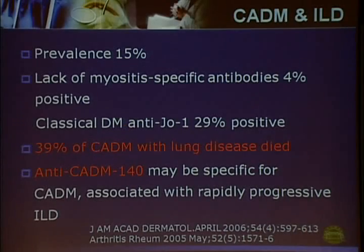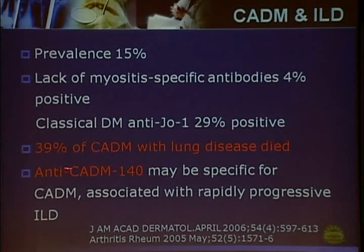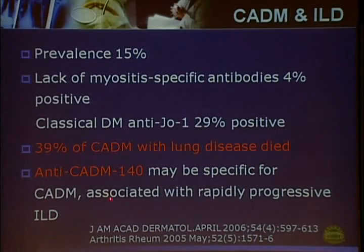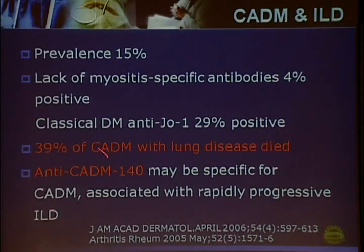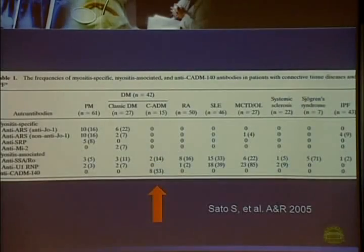CADM patients, unlike classical dermatomyositis patients, are usually anti-Jo-1 negative but have non-classical antibodies such as anti-CADM-140, which may be specific for CADM patients. These antibodies usually suggest rapidly progressive interstitial lung disease. Nearly 40% of CADM patients with ILD died after diagnosis.